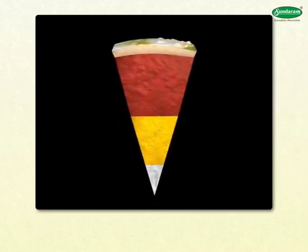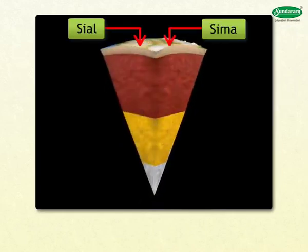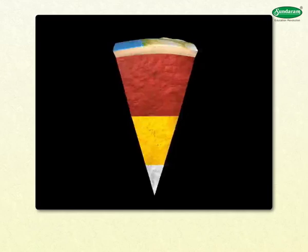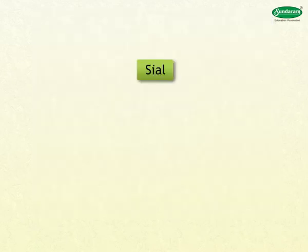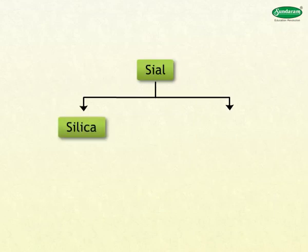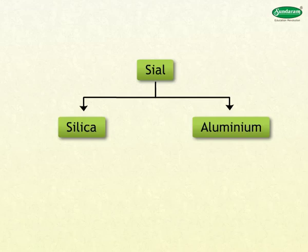The crust is made up of two parts: SIAL and SIMA. SIAL is the upper portion of the crust. The rocks in this layer consist of silica and aluminium. These elements are light in weight, so they are found in the upper layers. Continents are mainly made up of SIAL.